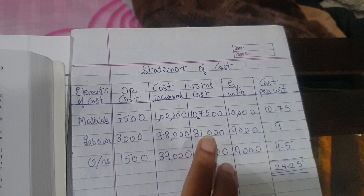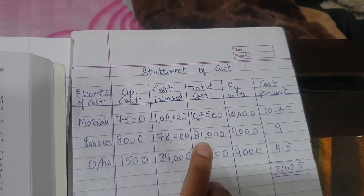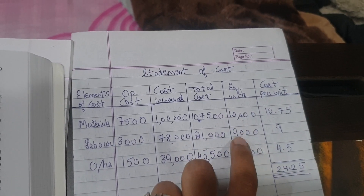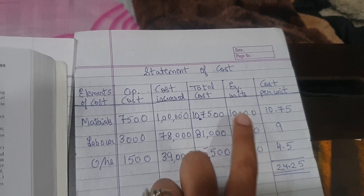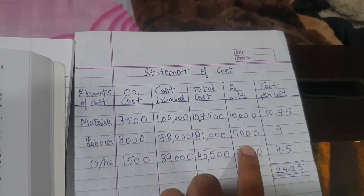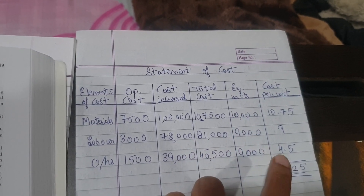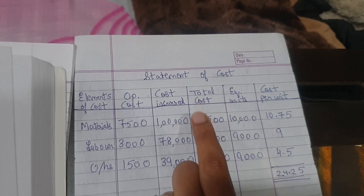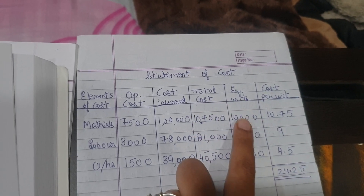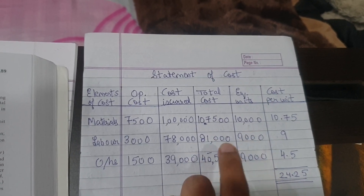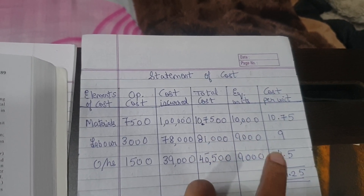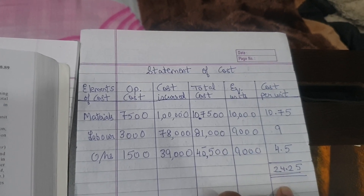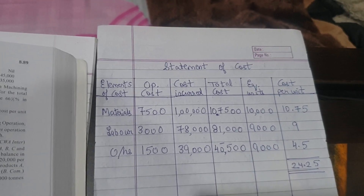I have written the combined total of both columns here. The equivalent units are the same as found in the previous table - material: 10,000; labor: 9,000; and overheads: 9,000. Cost per unit is total cost divided by equivalent units for each element.